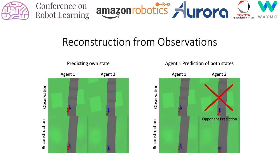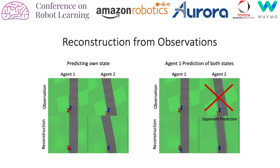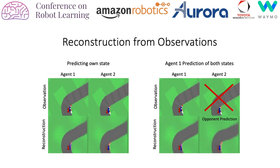Reconstructing their own state is a considerably easier task. Our agent still successfully learns to predict the opponent's state from its latent space.